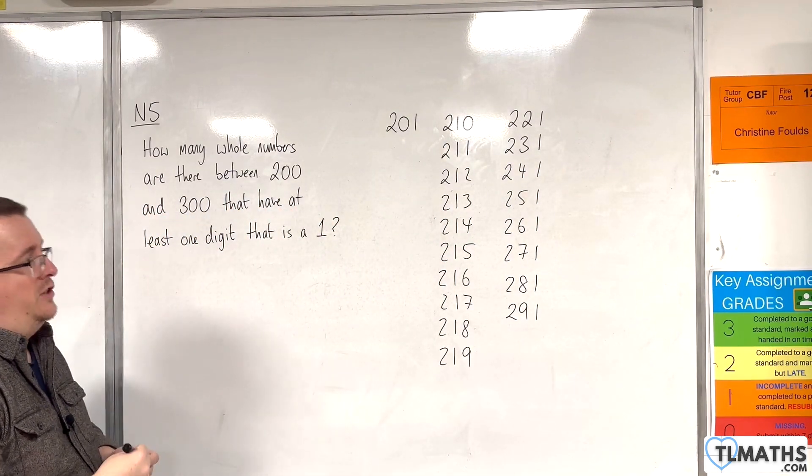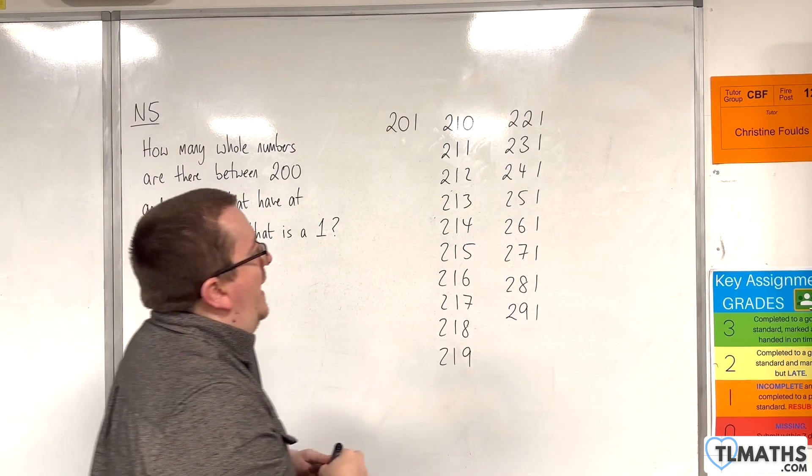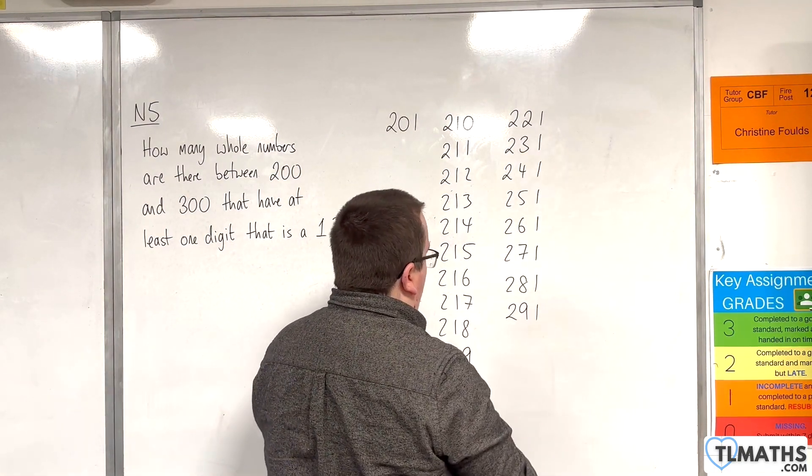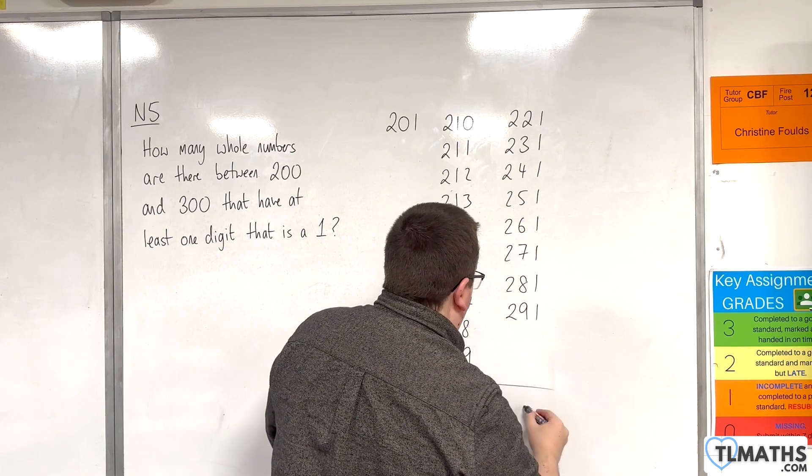And so that would be the last one. So in total, we've got 1, 2, 3, 4, 5, 6, 7, 8 in that column. I'll count them below. So we've got 8 there.